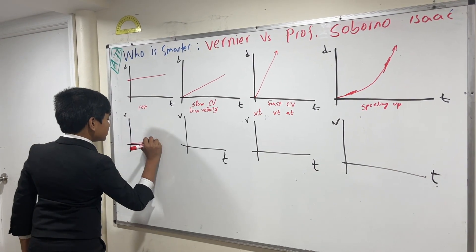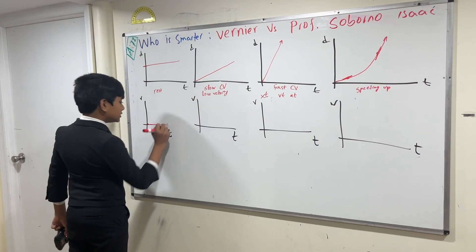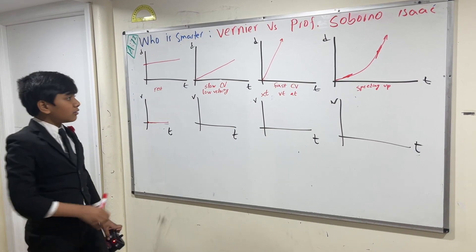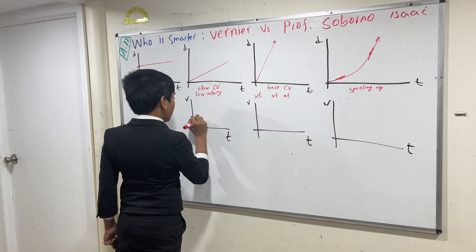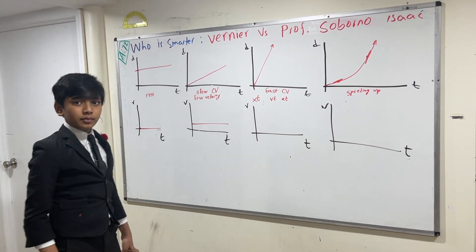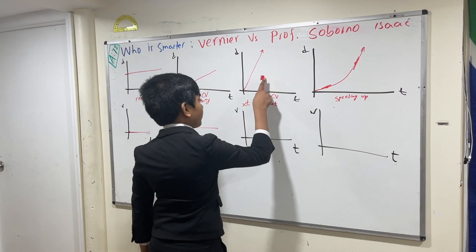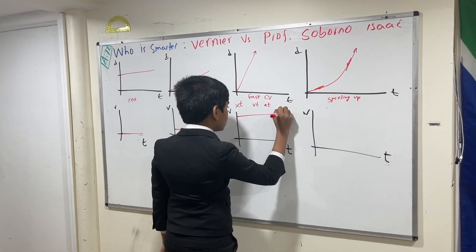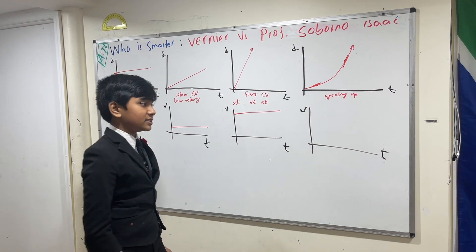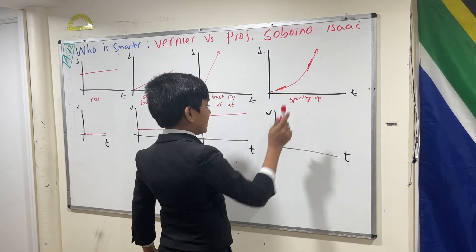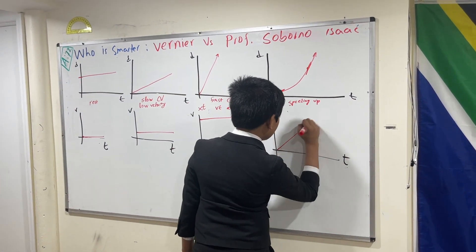Alright, so there is no change here. So, we have zero over here. Now, over here, it's a slow constant velocity. So, velocity is going to be constant and low. Here, we have a fast constant velocity. So, velocity is going to be constant and high. And speeding up velocity is going to increase like this.